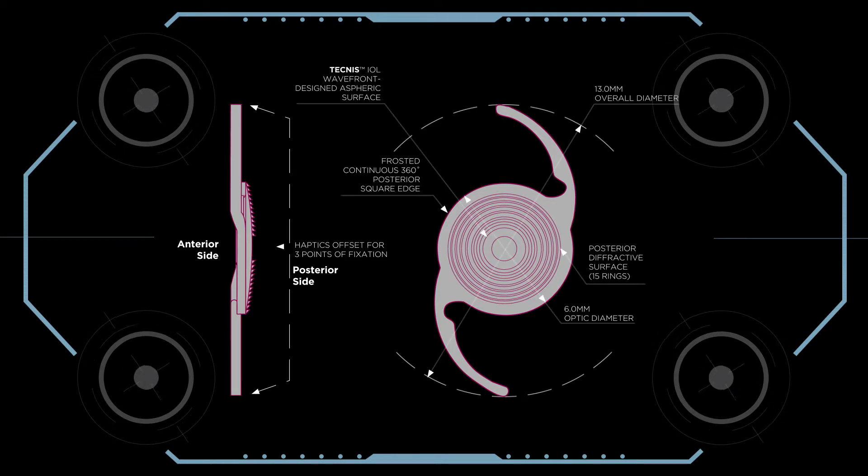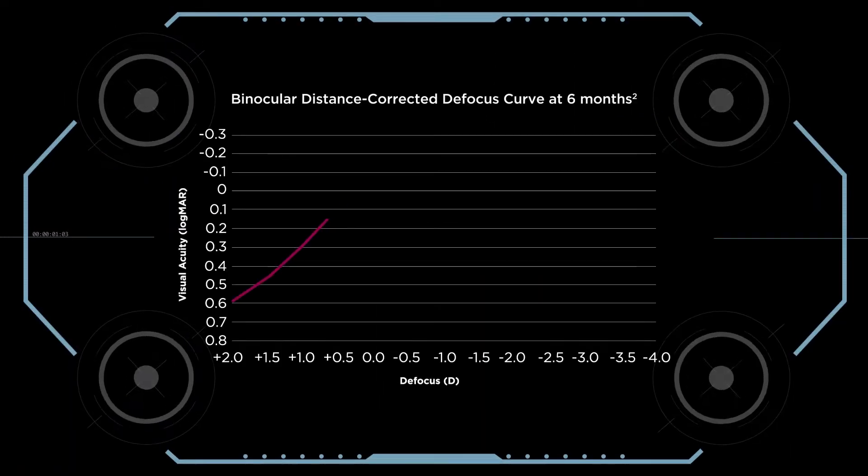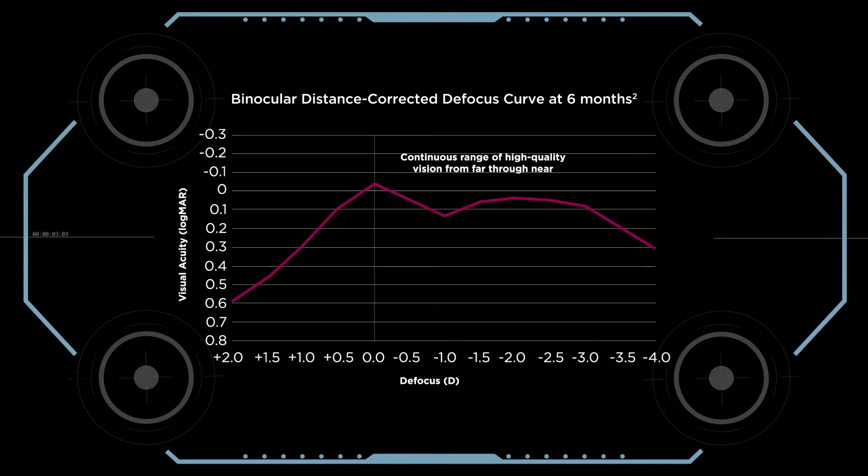The profile of the 15 diffractive rings of the Technis Synergy IOL create constructive and destructive interference to optimize light distribution. This modification of the diffractive profile and base curve alter the phases of light. This results in a lens that delivers continuous vision from distance through 33 cm.